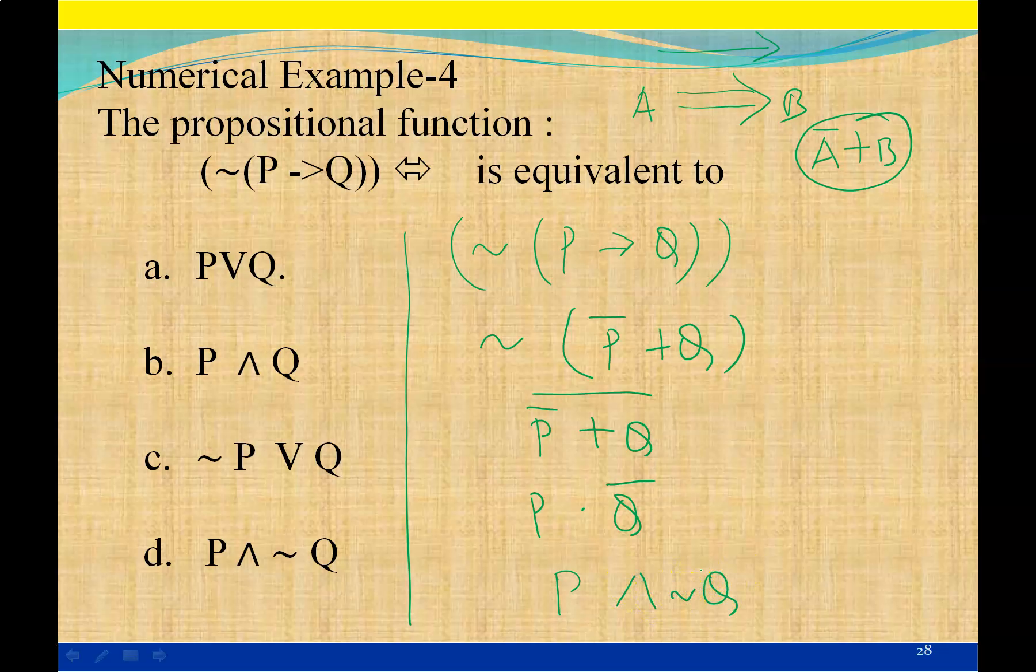According to this, P intersection complement of Q means option D is correct, while options A, B, and C are wrong. Please subscribe to the channel and see the next video in this lecture series.